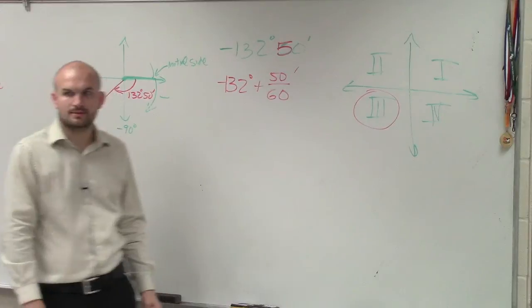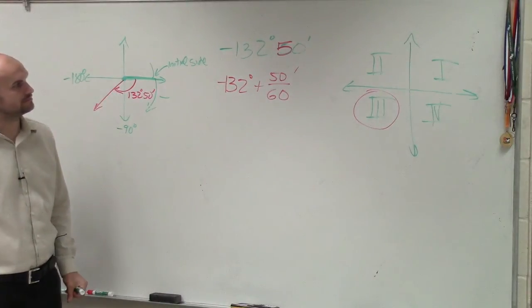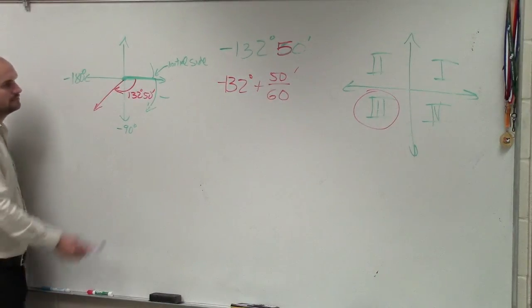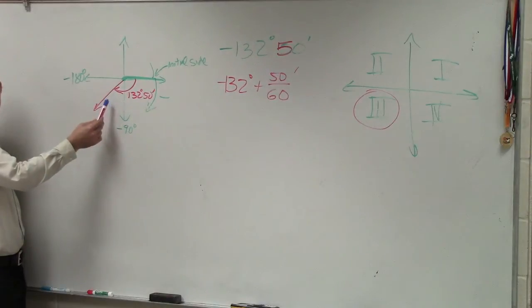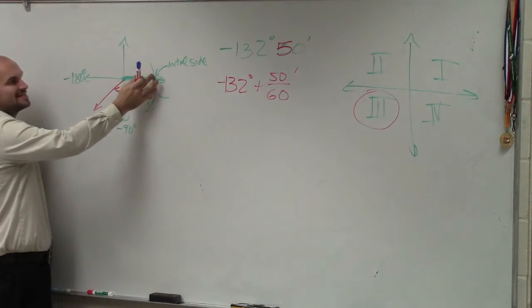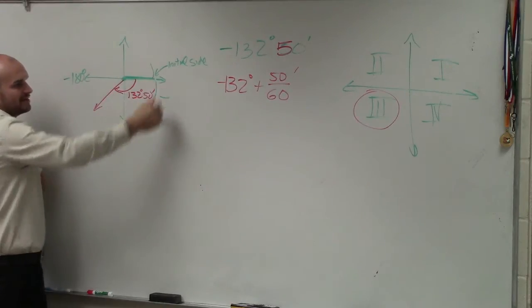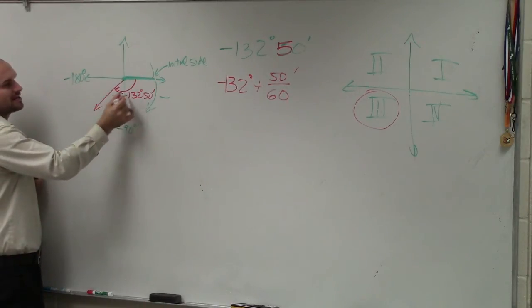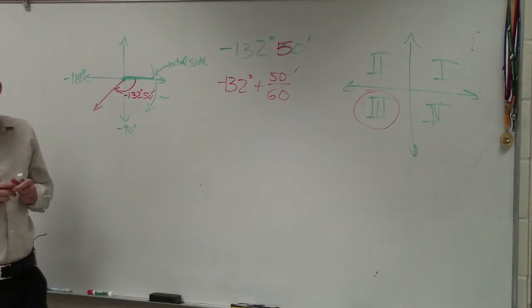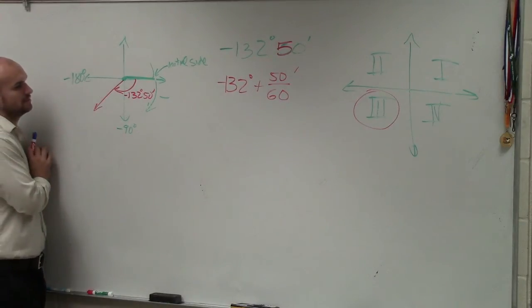Student asks about the angle labels: if that's negative 90 degrees, and that's negative 180 degrees. Well, this is just saying, if you have a positive angle, I would do 132 in that direction. But since it's negative, I'm going in the negative direction. That's just telling me which direction to go.